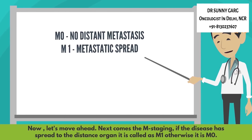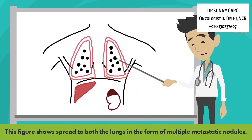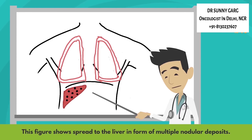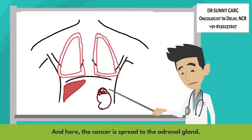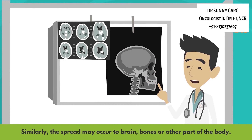Next comes M-staging. If the disease has spread to distant organs, it is called M1; otherwise it is M0. This figure shows spread to both lungs in the form of multiple metastatic nodules. Here, metastasis to the pleural covering of the lungs has resulted in fluid collection called pleural effusion. This figure shows spread to the liver in the form of multiple nodular deposits. Here the cancer has spread to the adrenal gland. Similarly, spread may occur to the brain, bones, or other parts of the body.